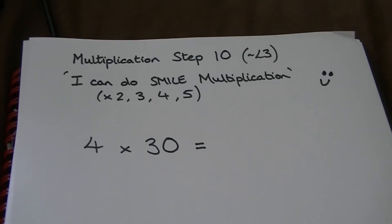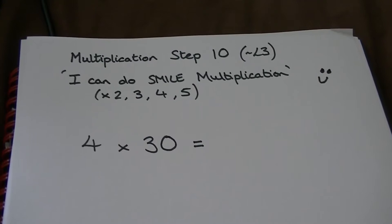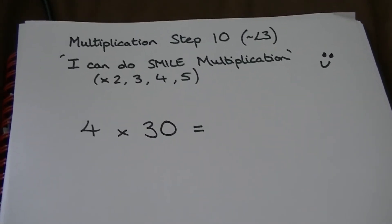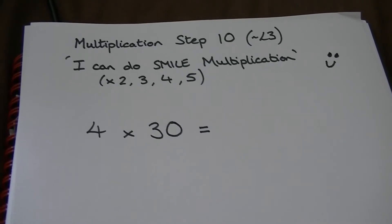Here we have multiplication step 10. I can do smile multiplication and as it's the beginning we're just going to use the 2, 3, 4 and 5 times tables.